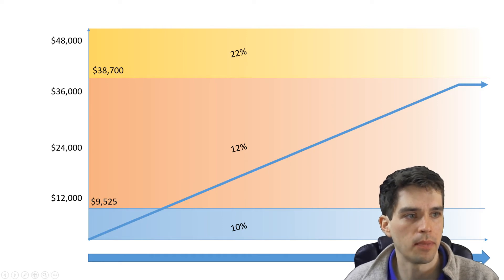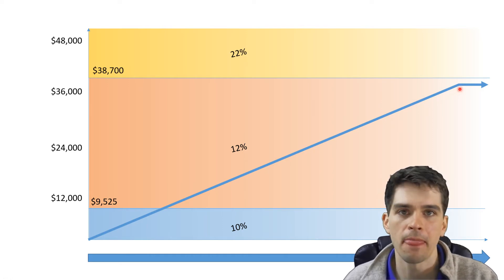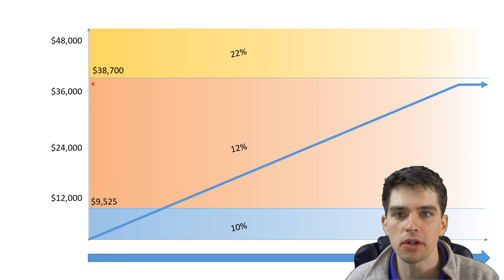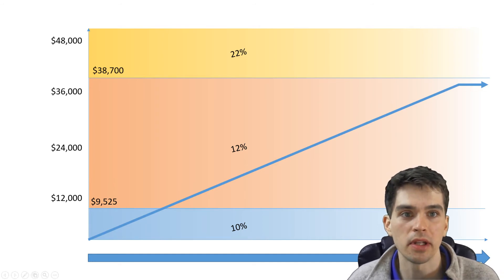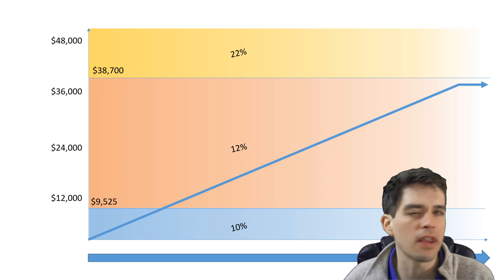Imagine it comes to December 10th and you say, oh, I've almost earned $38,700, I better stop working so I don't get up into the 22% tax bracket. It's funny that no one ever says that.